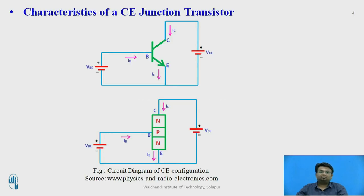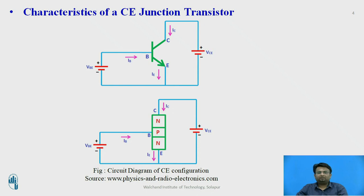Let us see the characteristics of common emitter configuration of the bipolar junction transistor. As you can see from the diagram, the BJT used is the NPN, where the base is connected to the positive terminal of VBE and the emitter is connected to the negative terminal of VBE. This base-to-emitter region will act as the input region. The base current is denoted by IB and the emitter current by IE.